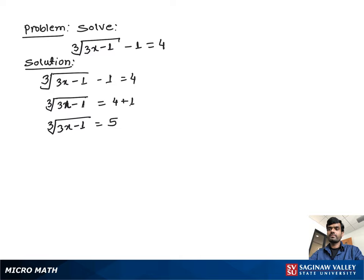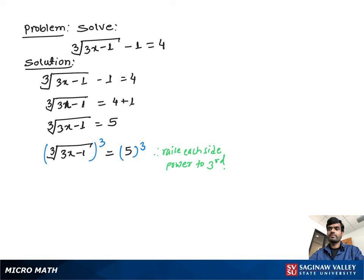To remove the cube radical sign, we raise both sides to the third power. So cube root of (3x minus 1) raised to the third power equals 5 to the third power. The cube root sign is removed, giving us 3x minus 1 equals 5 times 5 times 5, which is 125.